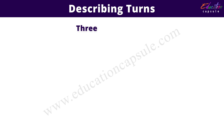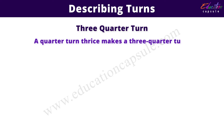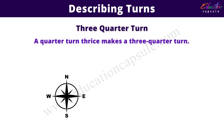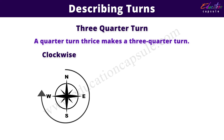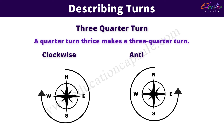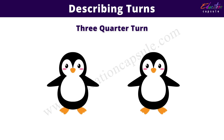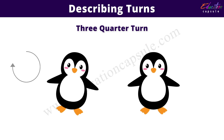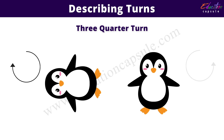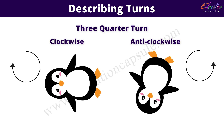Next is three quarter turn. A quarter turn taken thrice makes a three quarter turn. For example, if we take a three quarter turn clockwise from north, it will be west. And if we take a three quarter turn anticlockwise from north, it will be east. Here is another example — if this is the starting position of the penguin, then these will be the respective positions of the penguins after taking the clockwise turn and anticlockwise turn.